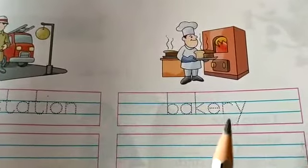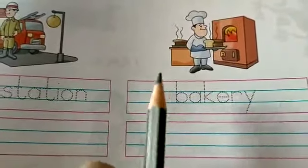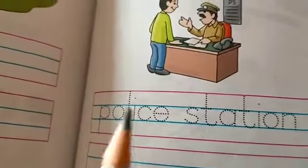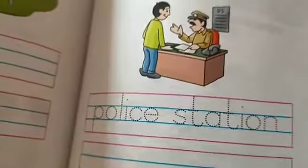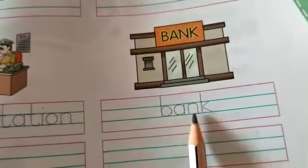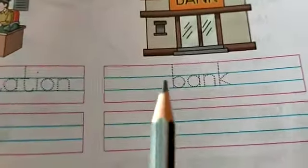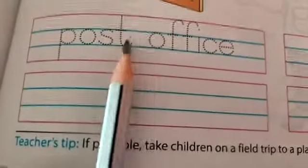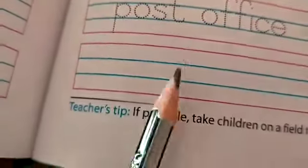Next one is bakery — B-A-K-E-R-Y, bakery. Trace the word bakery and then write in this column. Next one is bank — B-A-N-K, bank. Trace the word bank and then write the word bank. Next one is post office — P-O-S-T, post, O-F-F-I-C-E, post office. Trace the word post office, then write it in this column.